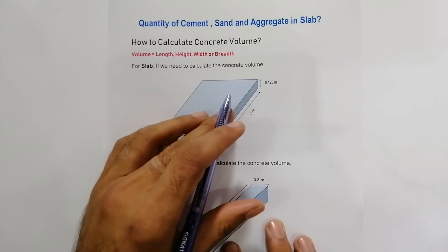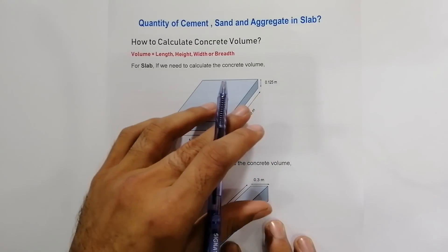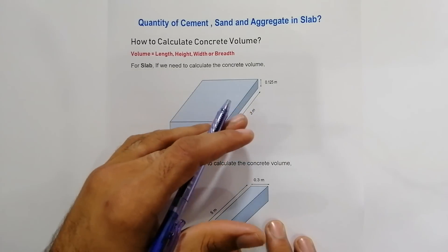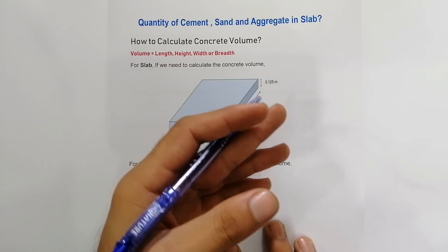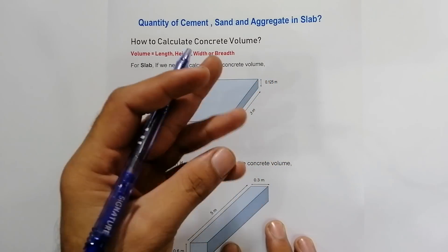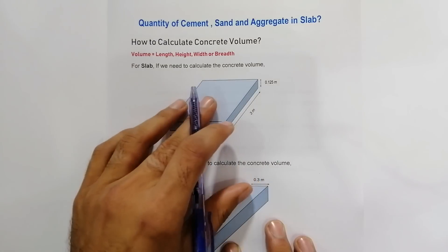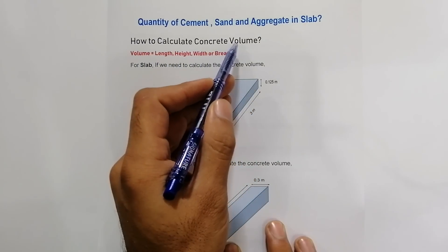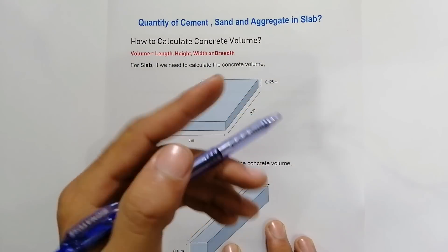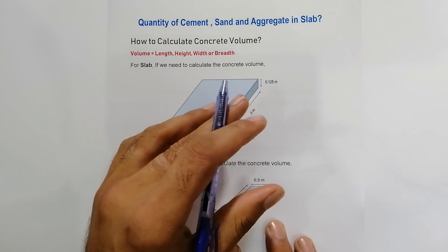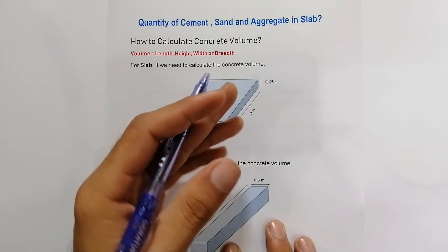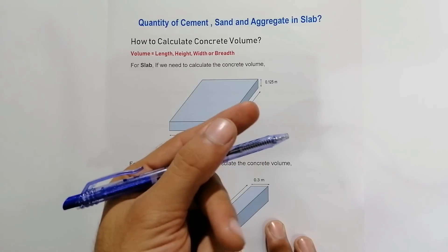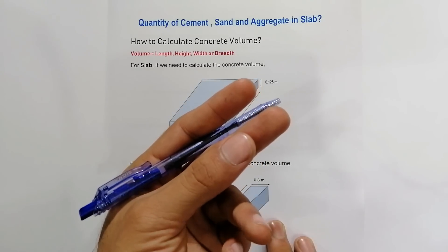Please like the video and subscribe the channel for more civil engineering updates. This video is long because I will also explain the water-cement ratio — how much water is required for beam, column, and slab concrete. First of all, how to calculate concrete volume for beam, column, and slab, because before finding the quantity of concrete we have to find the volume.